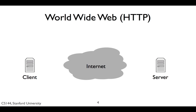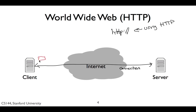Now that we've seen the basic way networked applications communicate, let's look at our first example: the World Wide Web. The World Wide Web uses something called HTTP, which stands for Hypertext Transfer Protocol. When you see 'HTTP://' in your browser, that means it's communicating using HTTP. We'll dig much deeper into the details of HTTP later in the course. For now, I'm just going to give a very high-level overview. In HTTP, a client opens a connection to a server and sends commands to it. The most common command is GET, which requests a page.